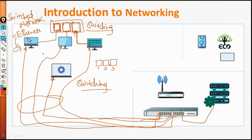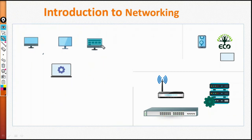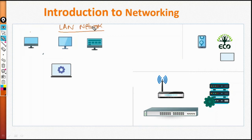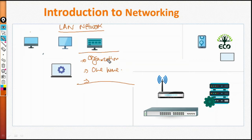You can call this a switched network, an Ethernet network, or a wired network — but the best term is Ethernet network. When you have connected these devices together and they are able to communicate, the moment you connect two or more devices it becomes a Local Area Network. A local area network is a network that belongs to one entity — it could be one organization or one home. It is a private network that belongs to an entity.